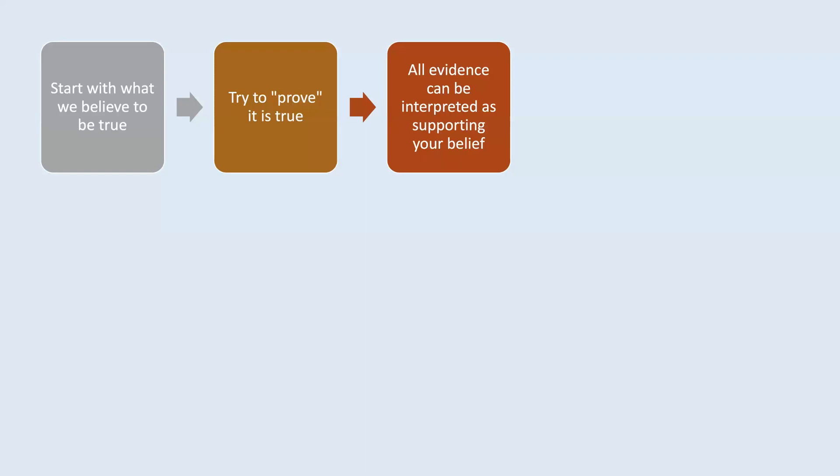We talked about some theories for this. It's comforting to find that your beliefs are supported, for example. But again, it's a way that we think about things. Confirmation bias — the bias — means that it influences our process of deciding what to believe, deciding what information is correct.